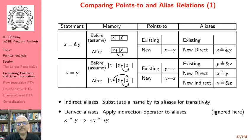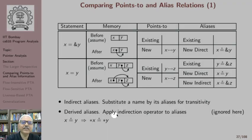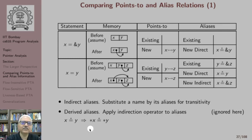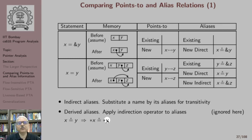There is another category of aliases called derived aliases, which we do not show in detail here. Given an alias pair, we discover more aliases by applying the indirection operator. For example, if x is aliased to y, then *x will be aliased to *y provided *x happens to be a pointer. We ignore derived aliases for now.